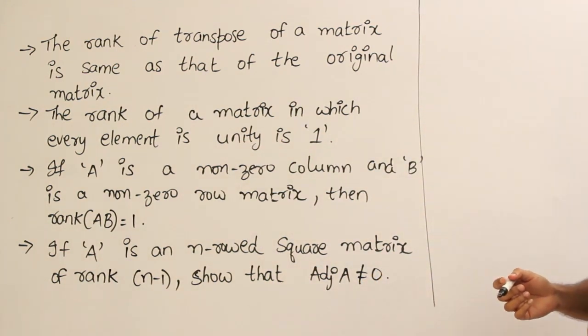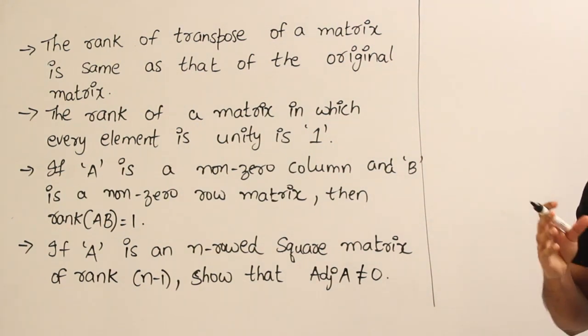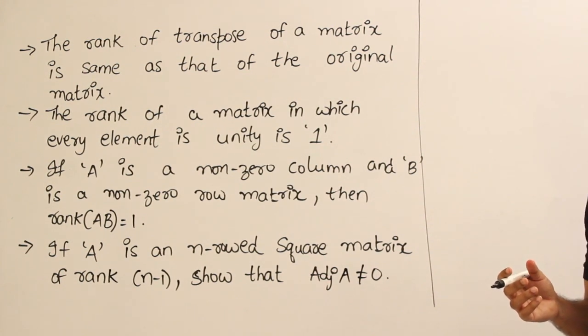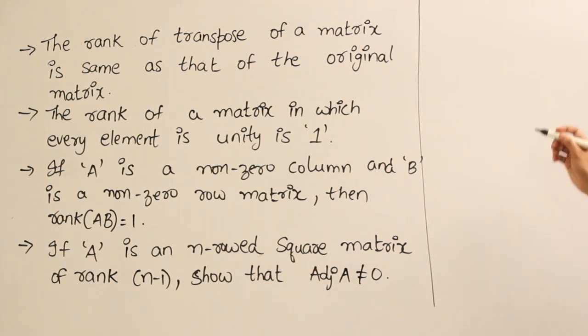So, they are saying that if you have a matrix A and if you find out the rank of it and let us say you found out the rank as R and if you take A transpose, they are saying that even A transpose will also have the same rank like this.